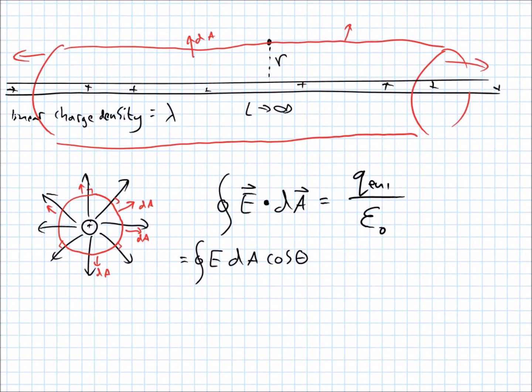So because of that, the cosine, cosine of zero is one. That just becomes a one. So now we're just looking at the surface integral of E dA. So it's getting more doable, right?